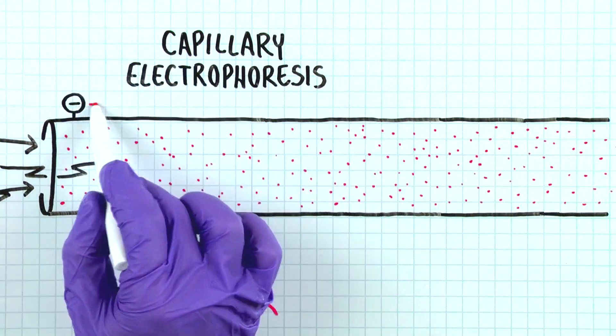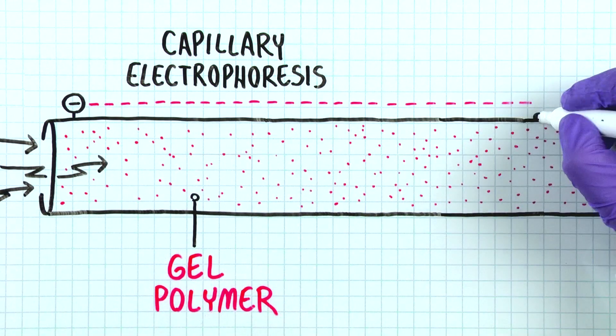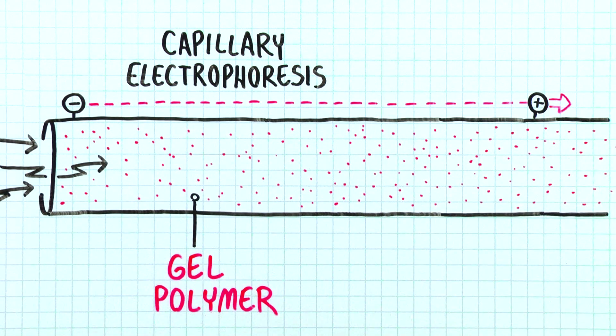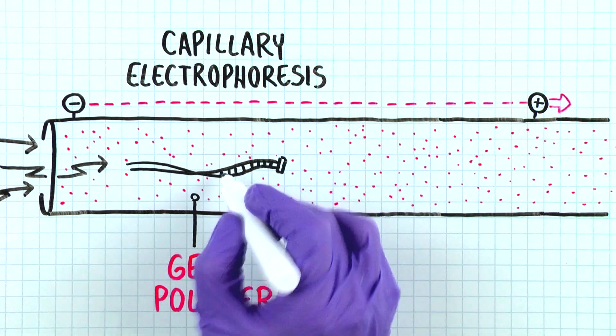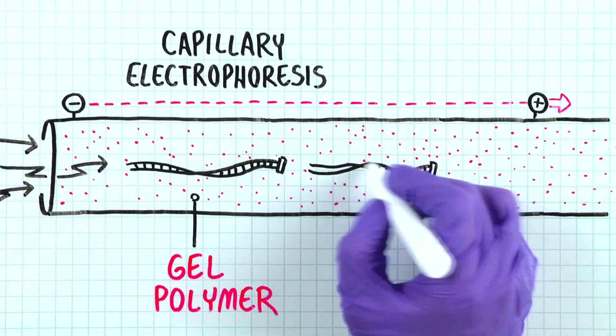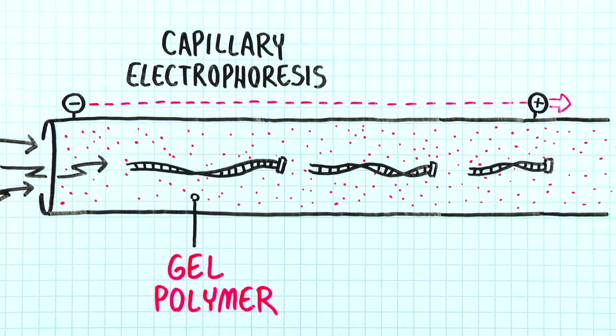The labeled PCR products and the size markers are then electrokinetically injected into the capillaries. During electrophoresis, the negatively charged DNA fragment moves from the cathode through the polymer-filled capillary towards the positively charged anode when high voltage is applied between the electrodes.